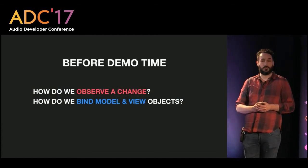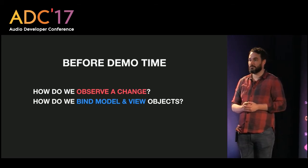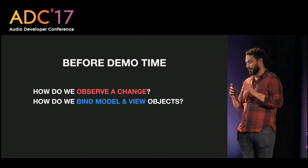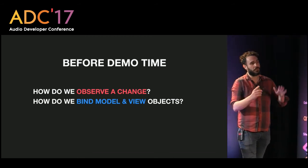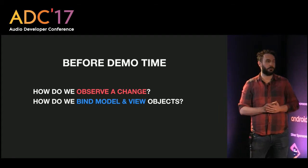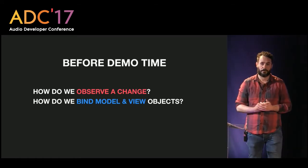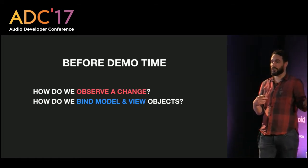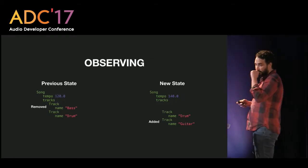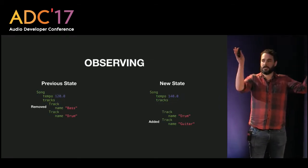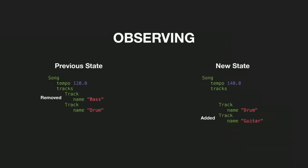Before the demo — I made a small host DAW in my free time — let's cover some flip-specific details. First, how do we observe a change? And second, a very common development task: how do we bind model and view objects?